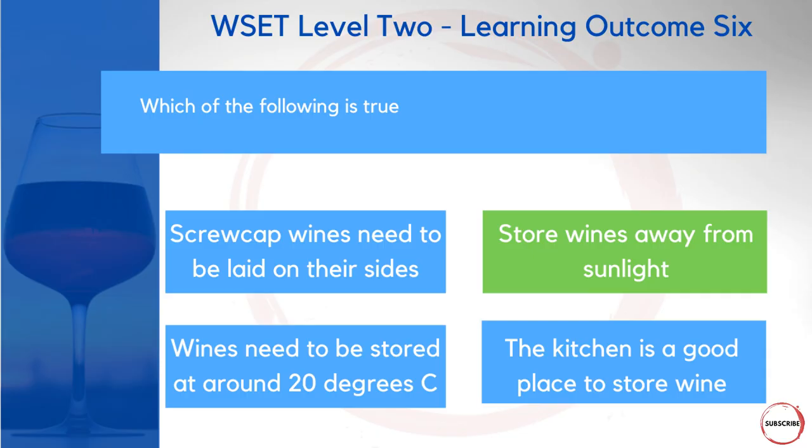You will go through the difference between corked bottles and screw top bottles and the different ways you would store them. For screw top wines, you don't need to lay them down on their side. You'll also go through the perfect conditions for cellaring a wine — 20 degrees is actually going to be too high. It's also not recommended that you keep wines in your kitchen, because temperature fluctuations from cooking can have an adverse effect on the wine. The only correct answer is that you need to store wines away from sunlight, as UV light can actually cause a fault in the wine.